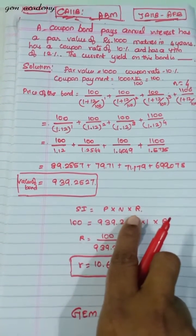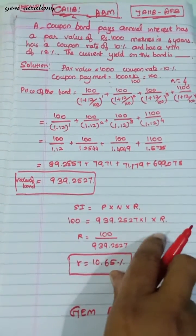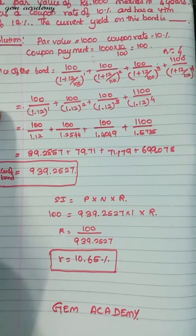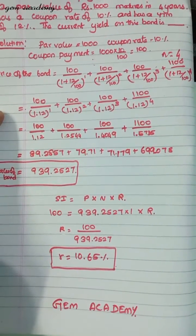As I've already told in previous videos, for current yield N equals 1, and R is what we need to find. By solving this I'm getting the current yield as R equals 10.65%.